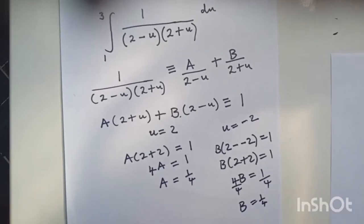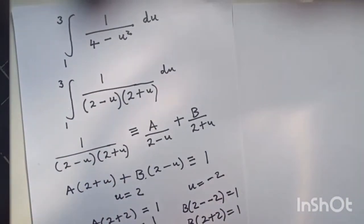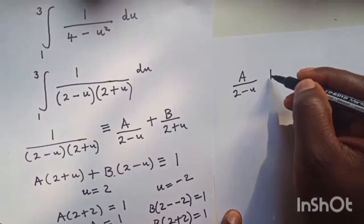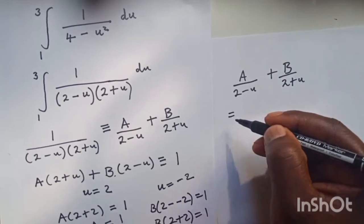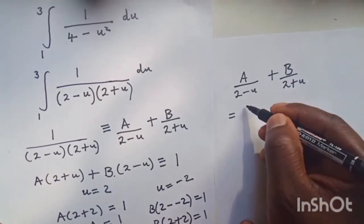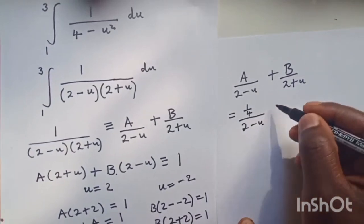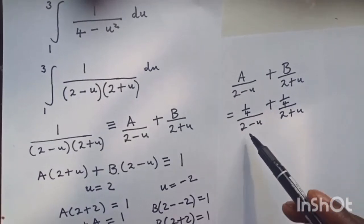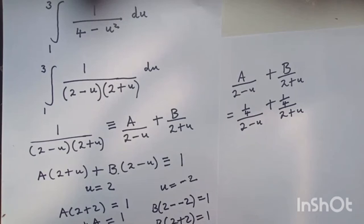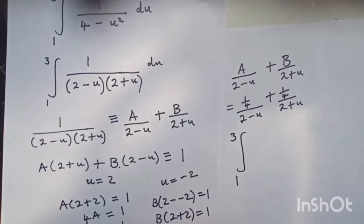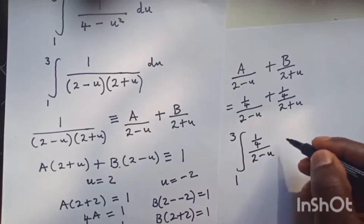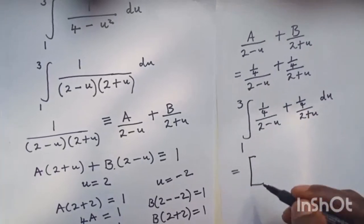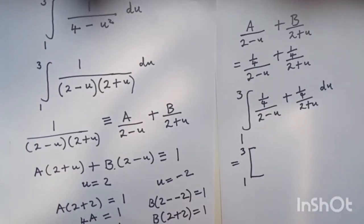Substituting the values of A and B into the partial fractions, the integral from 3 to 1 becomes the integral of one quarter over (2 minus u) plus one quarter over (2 plus u) du. When integrating inverse functions we make use of the natural logarithm (ln).